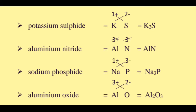Aluminum nitride. Aluminum is Al with oxidation number 3 plus. Nitride is N with oxidation number 3 minus. 3 plus and 3 minus cancel out, so the formula for aluminum nitride is AlN.